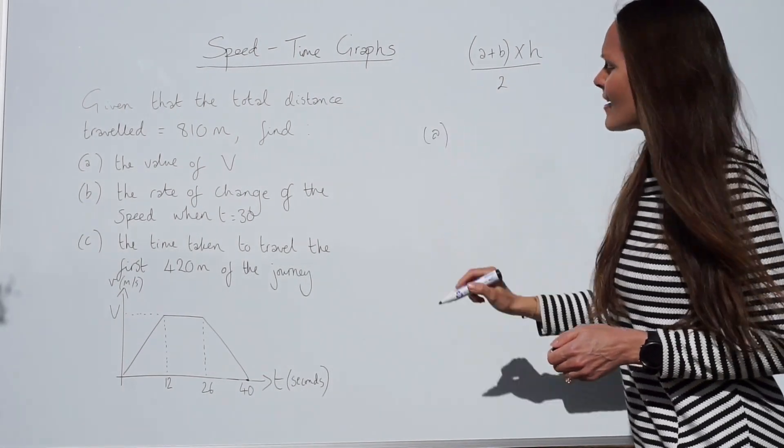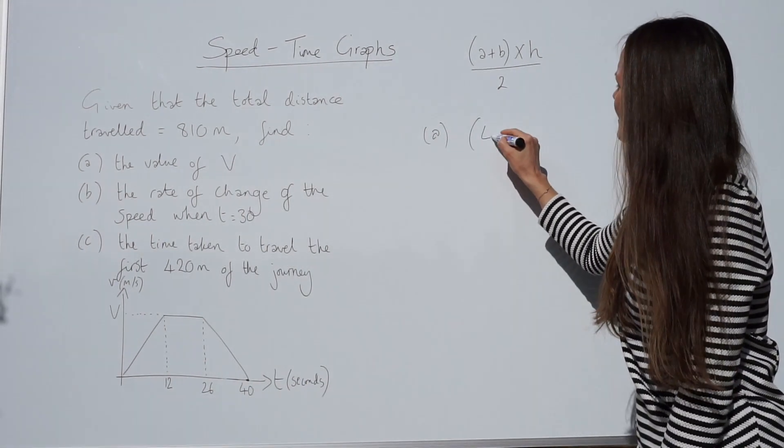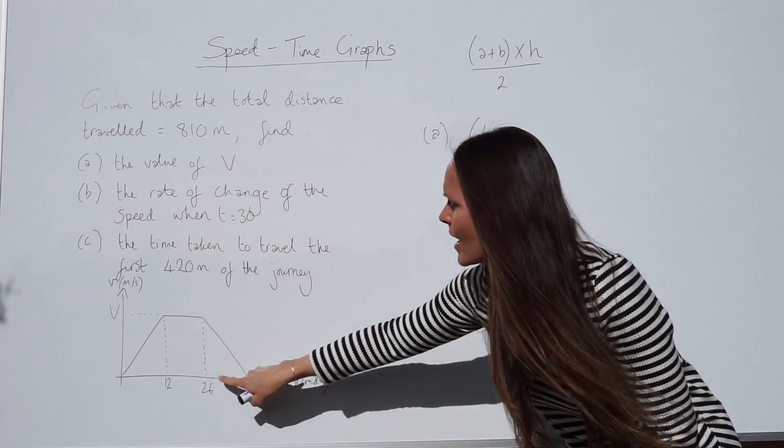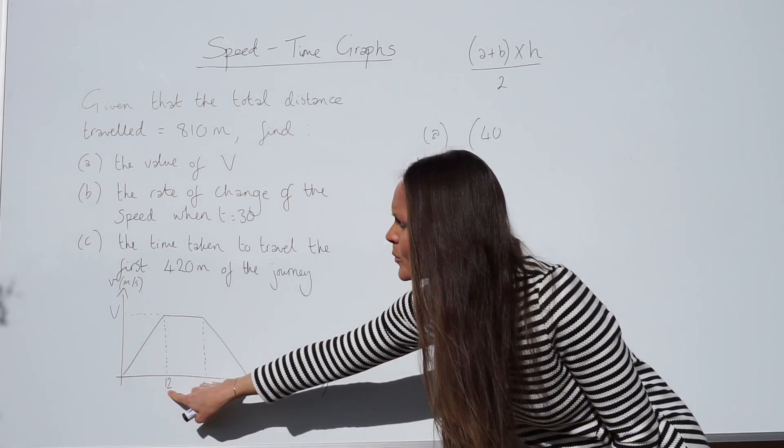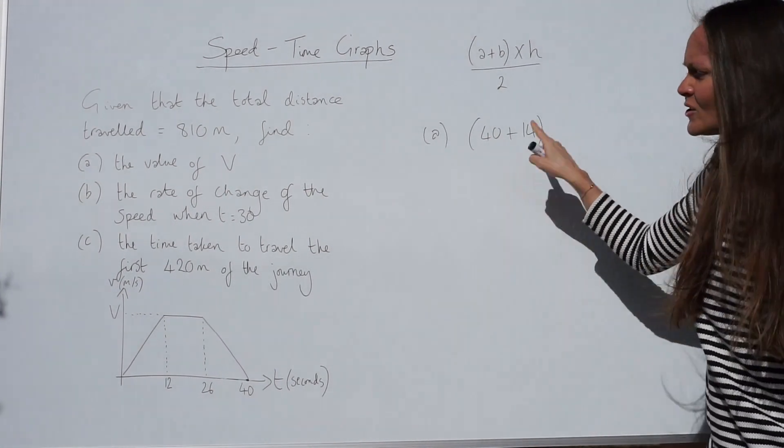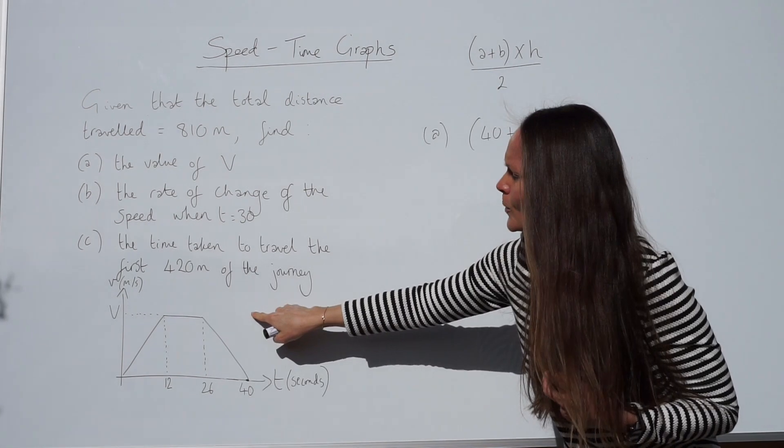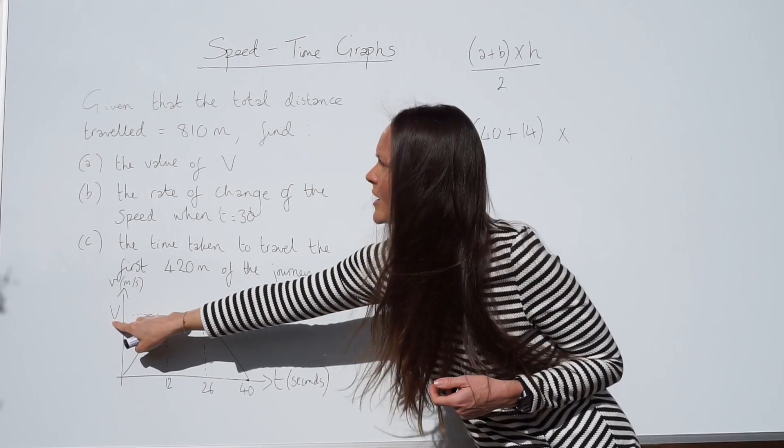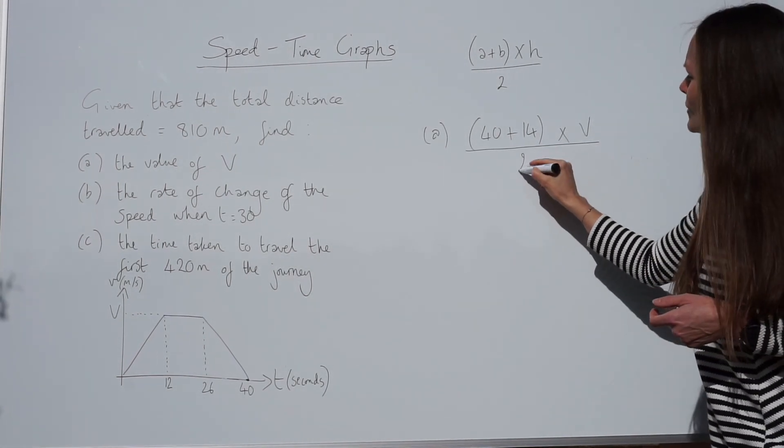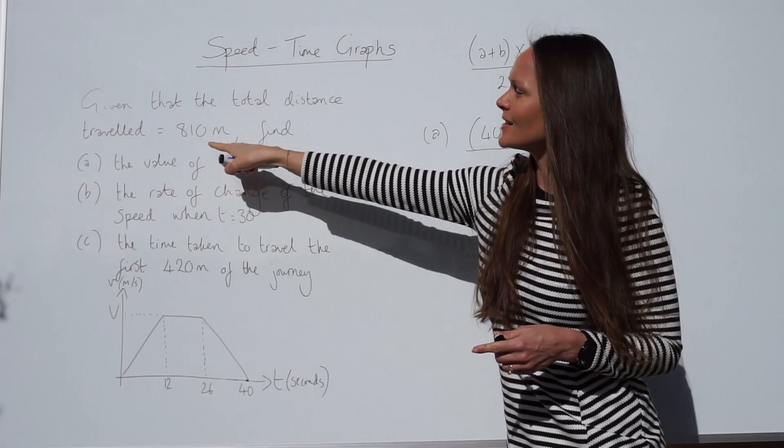The parallel sides of this trapezium, well the base has a length of 40, and then this one has a length that we can calculate by subtracting 26 take away 12, so this distance here is 14. So I'm just adding together the two parallel sides opposite each other. Now I'm going to multiply by the vertical height, so we don't actually know the height, it's V, this is what we're trying to work out. So I'm just going to write V instead. Then you need to always divide by 2, and this is equal to the area, and the area is the distance, which is 810.